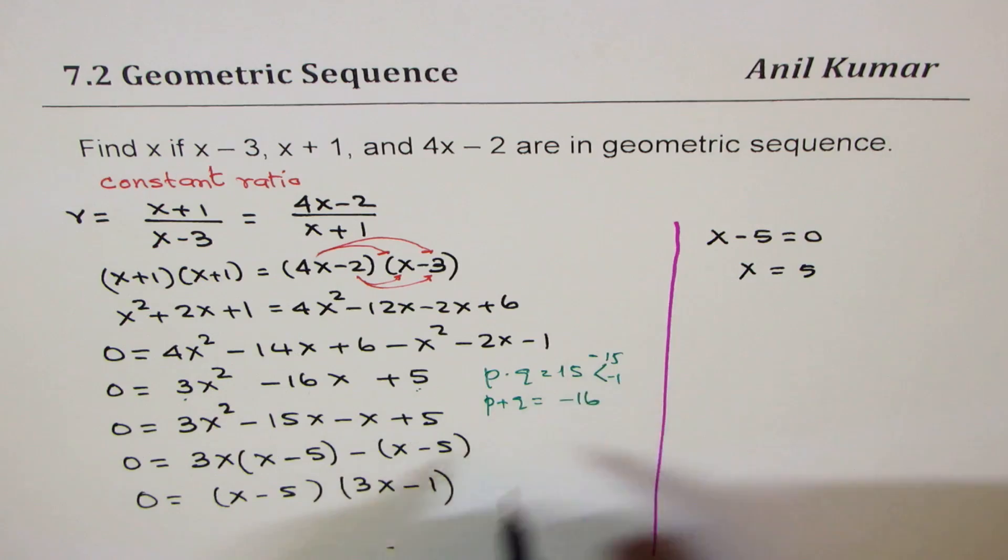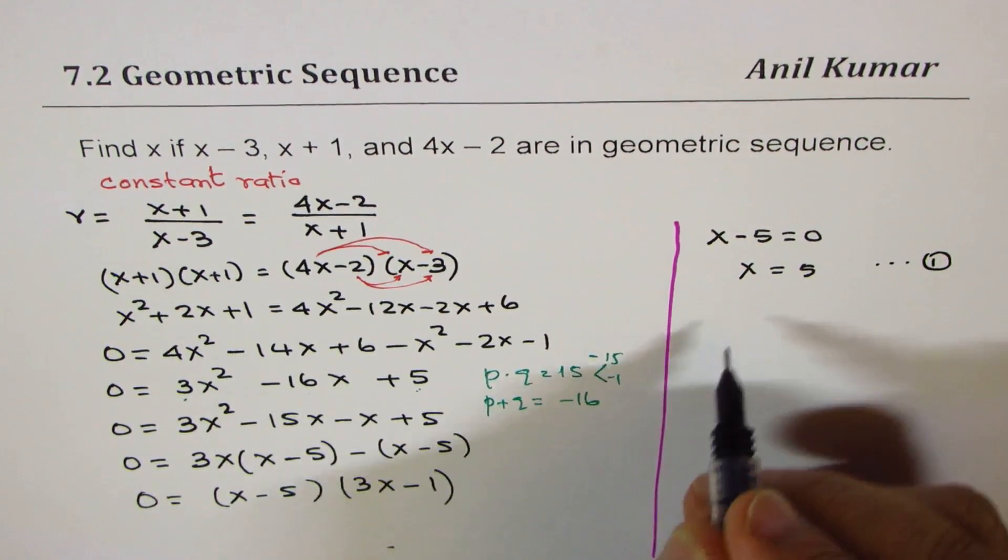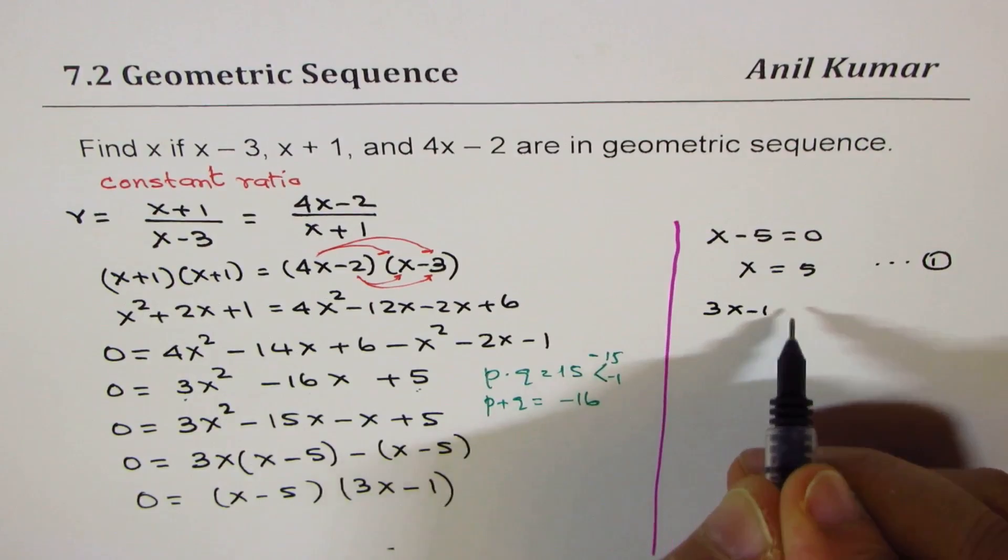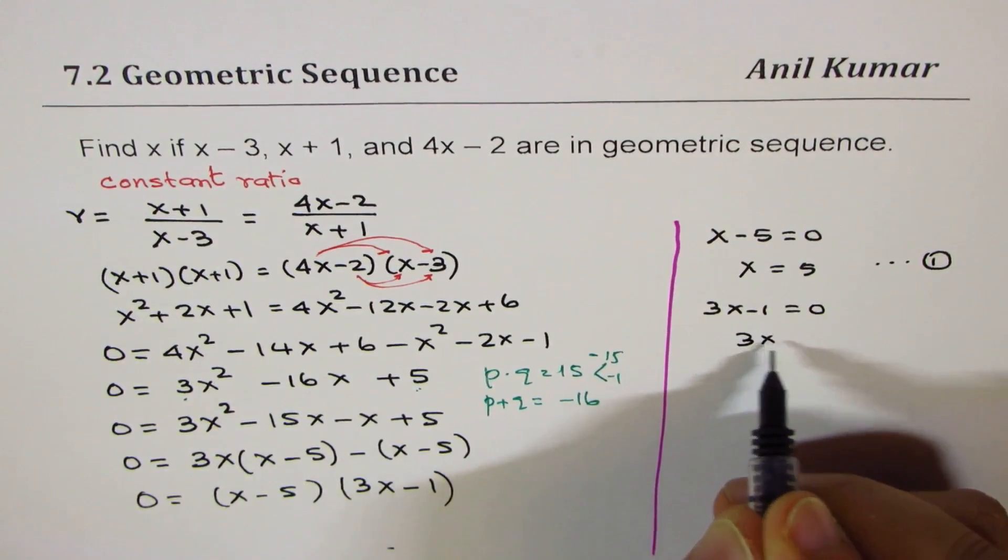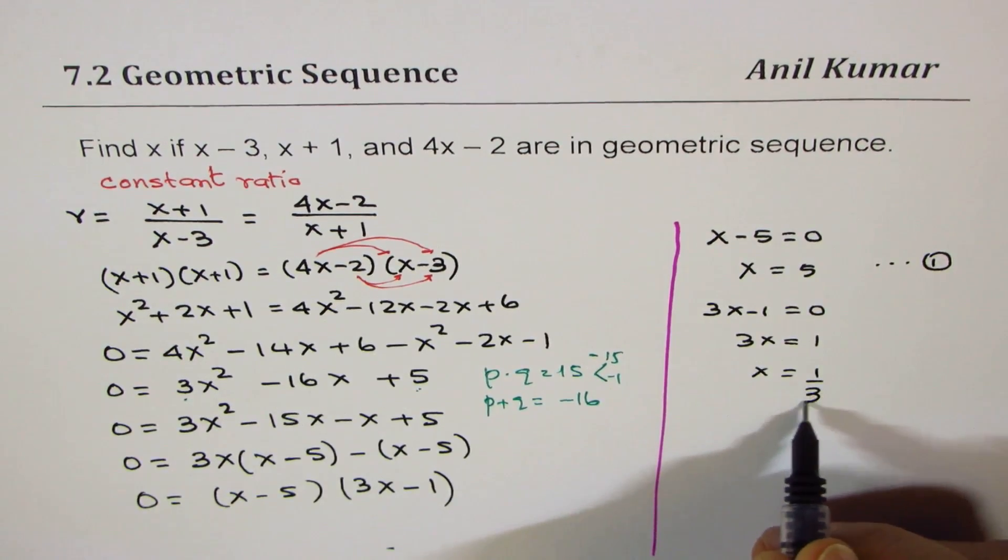The second solution is 3x - 1 = 0, so 3x = 1, and x = 1/3.